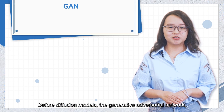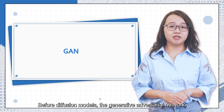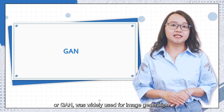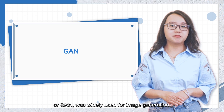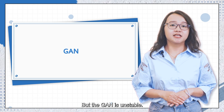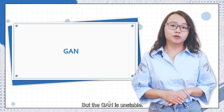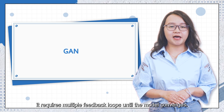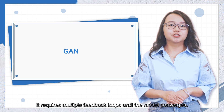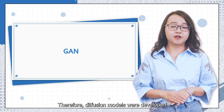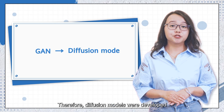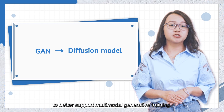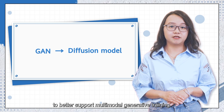Before diffusion models, the Generative Adversarial Network, or GAN, was widely used for image generation. But the GAN is unstable. During training, it requires multiple feedback loops until the model converges. Therefore, diffusion models were developed to better support multimodal generative training.